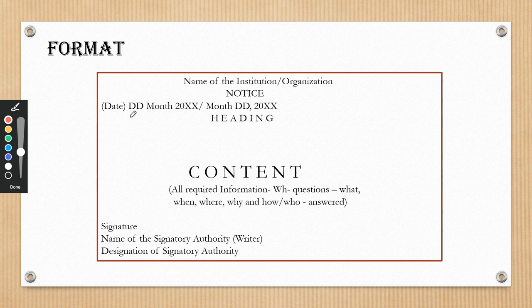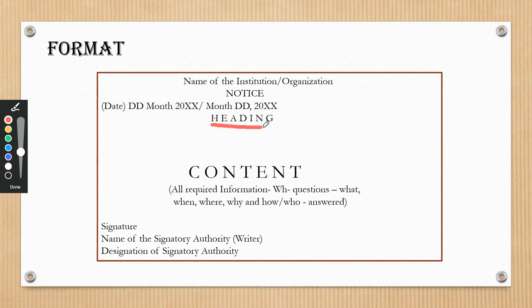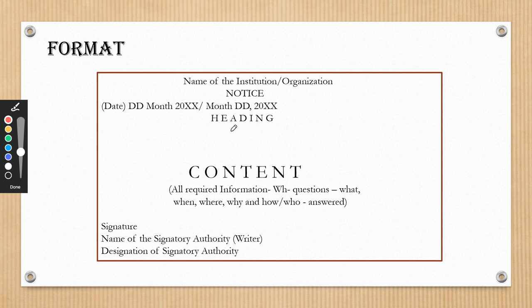The date is written in two ways: either we write the date first, then the month name and the year; or we write the month name first, then the day, then a comma, and after that the year. Next comes the heading. The heading should be written in capital letters — the purpose is simply that the heading must be highlighted. You can also write it in running handwriting and underline it. After writing the heading, it is your choice whether to leave a line or not; if you leave a line, it looks really good, as the heading is highlighted.